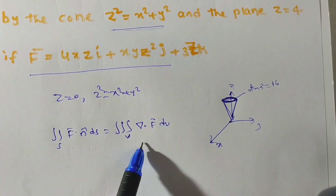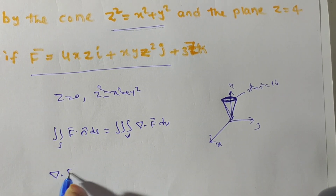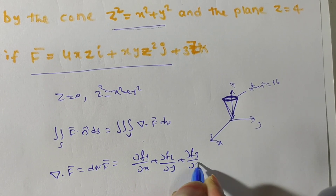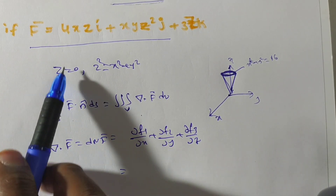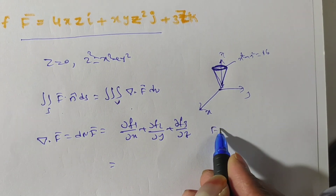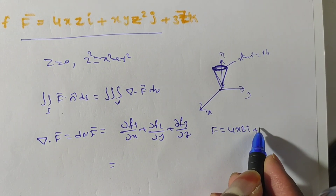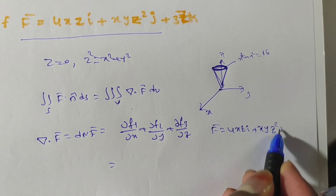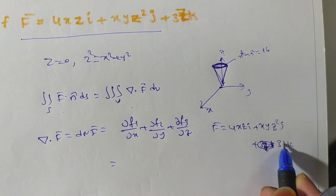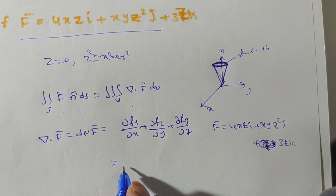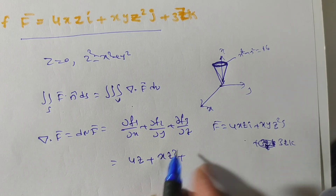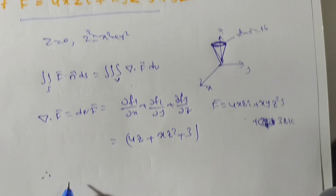Now, ∇·F = div F = ∂F₁/∂x + ∂F₂/∂y + ∂F₃/∂z. Here F₁ = 4xz (i-component), F₂ = xyz² (j-component), F₃ = 3z (k-component). Differentiating: ∂F₁/∂x = 4z, ∂F₂/∂y = xz², ∂F₃/∂z = 3. Therefore, div F = 4z + xz² + 3.